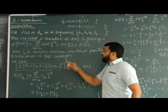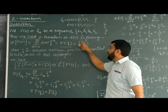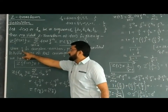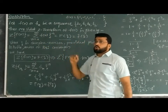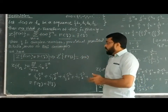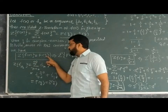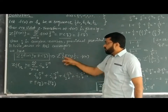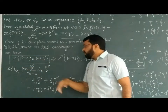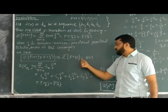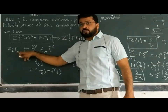When we open the summation, we get a function of z, which we denote as F(z) or F-bar of z. Here, z is a complex number, provided that the infinite series on the right-hand side converges to a particular value. We also define the inverse Z-transform: Z-inverse of F(z) equals f(n).